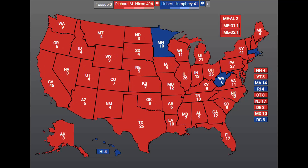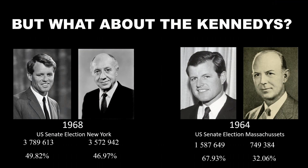But there is one very big unanswered question so far in this timeline: what about the Kennedys? In 1964, Ted Kennedy wins his brother's former Senate seat, as in our timeline. Robert Kennedy, however, remains Attorney General throughout the eight years that his brother is President, and he first runs for Senate in 1968, challenging and defeating incumbent Republican Senator of New York, Jacob Javits.